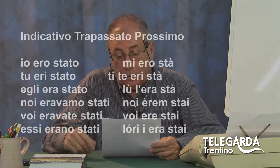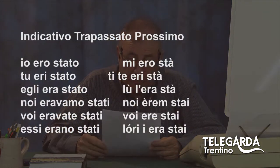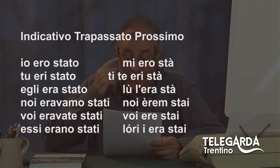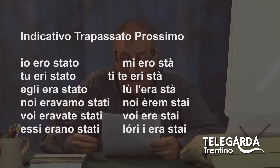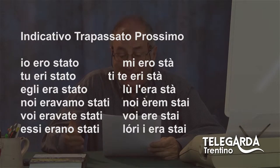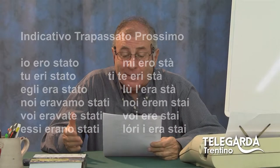L'indicativo trapassato prossimo: io ero era l'imperfetto, trapassato prossimo diventa io ero stato. Tu eri stato, egli era stato, noi eravamo stati, voi eravate stati, essi erano stati. Qui basta aggiungere 'sta'. Quindi: mi ero sta, ti te eri sta, lui le era sta, noi erem stai, voi ere stai, loro i era stai.